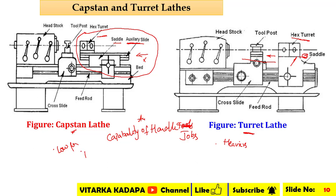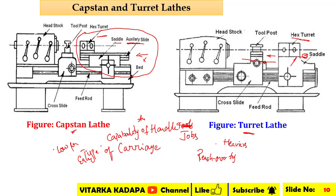Next, the type of carriage movement. In the turret lathe the carriage is of the reach-over type. In the capstan lathe it is also equipped with a reach-over type carriage, since it is employed for relatively smaller jobs.